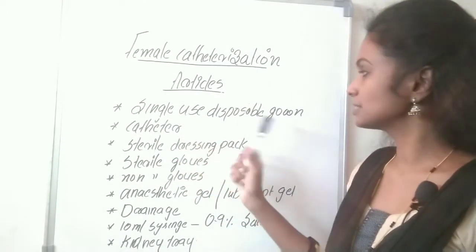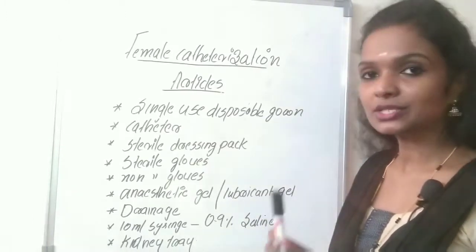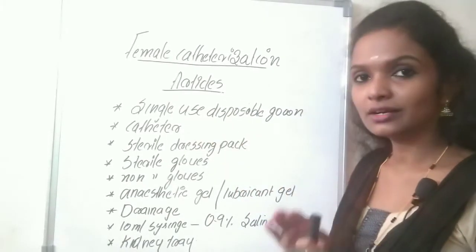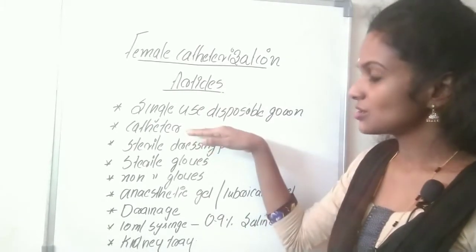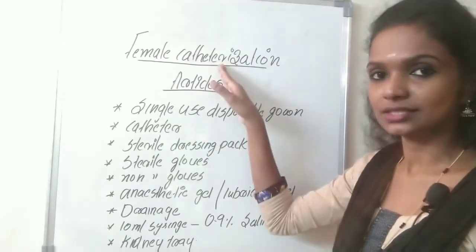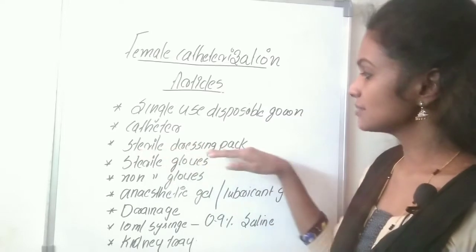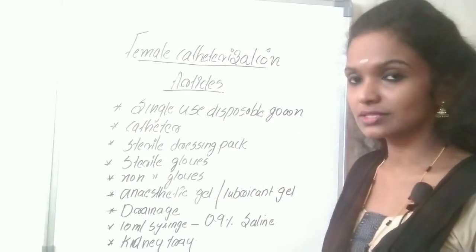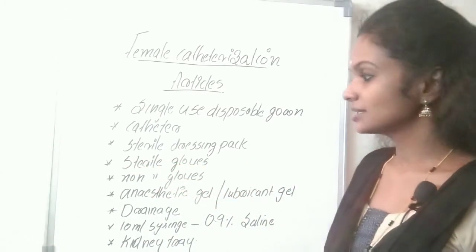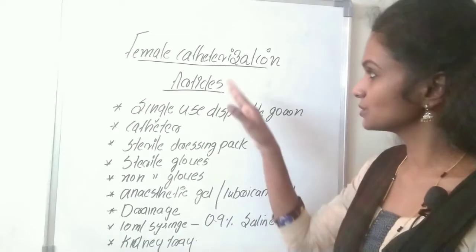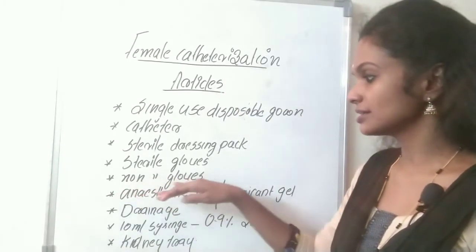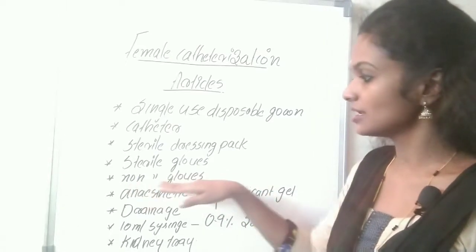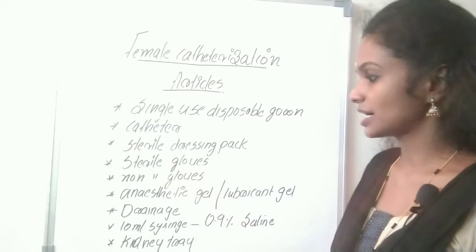After the procedure, the gown will be soiled and discarded if it is a single-use disposable gown. For the catheter, we use the one ordered by the physician. The sterile dressing pack includes sterile artery forceps, sterile gauze pieces, and sterile cotton balls. Sterile gloves are needed for the nurse performing the catheterization, and one extra pair of non-sterile gloves for the assistant.